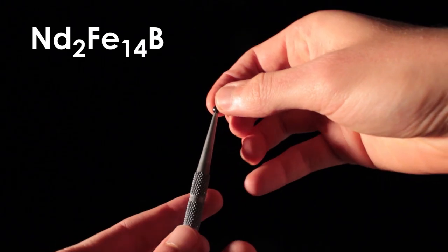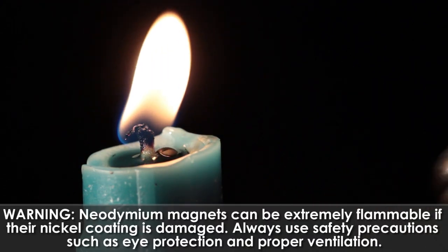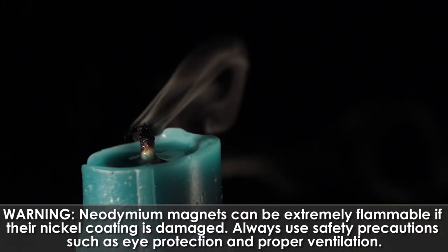This is a neodymium magnet. It's pretty darn strong. And now, after heating it in a flame, it's no longer magnetic. What just happened?